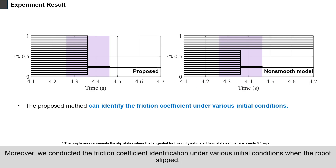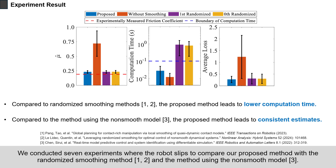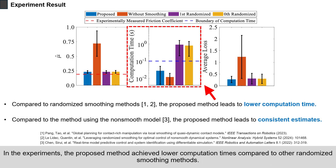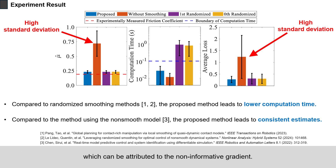Moreover, we conducted friction coefficient identification under various initial conditions when the robot slipped, and observed that the proposed method allows identification to be conducted successfully under various initial conditions. We conducted seven experiments where the robot slips to compare our proposed method with the randomized smoothing method and the method using the non-smooth model. The proposed method achieved lower computation times compared to other randomized smoothing methods. Moreover, the method using the non-smooth model shows a higher mean and standard deviation in its estimates and losses than other methods, which can be attributed to the non-informative gradient.